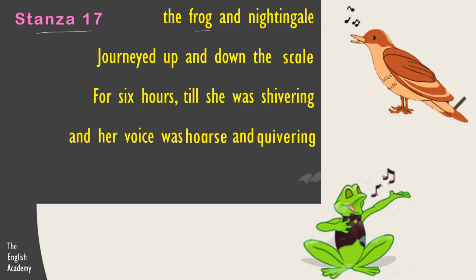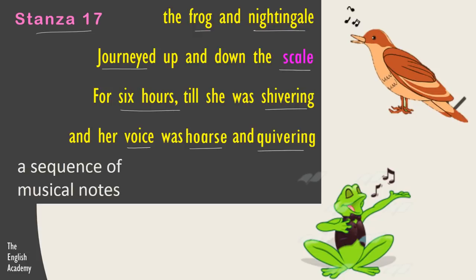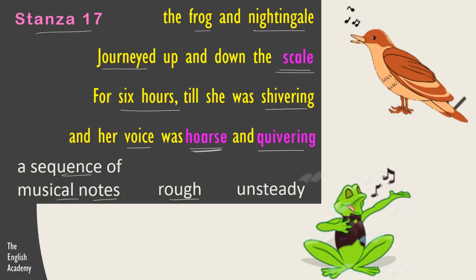Stanza 17: 'The frog and nightingale journeyed up and down the scale for six hours till she was shivering and her voice was hoarse and quivering.' Scale means a sequence of musical notes — the frog trained her to sing different high and low notes of music. Hoarse means rough, and quivering means unsteady and shaky. The frog made her sing continuously for six hours, up and down the scale, singing high and low notes of music.